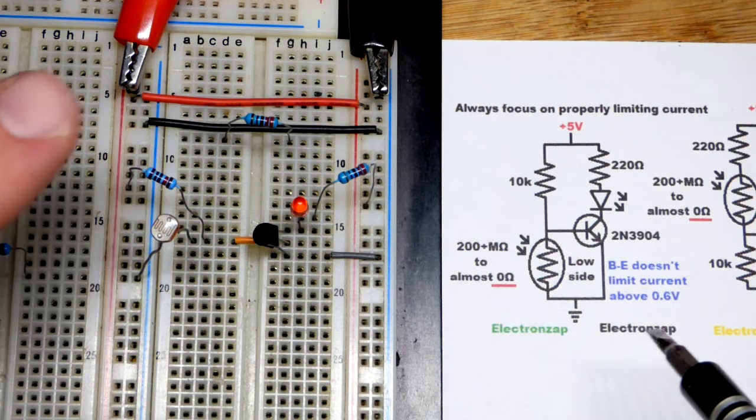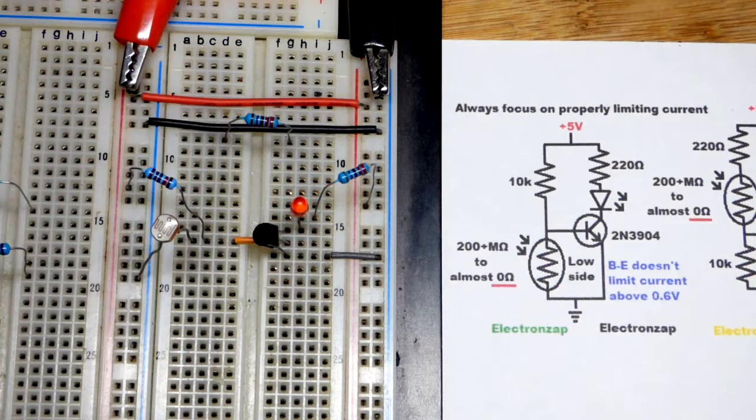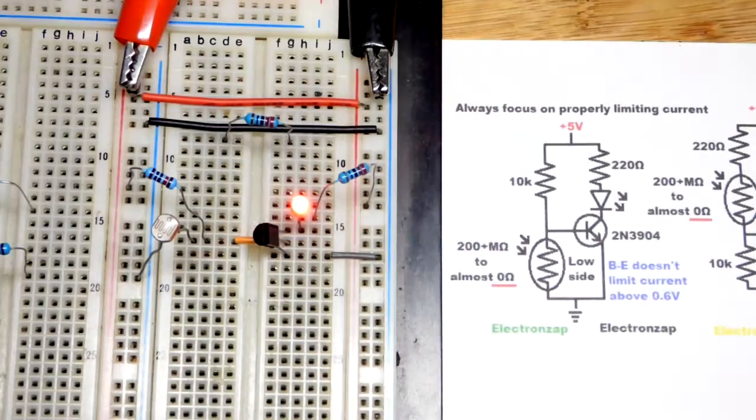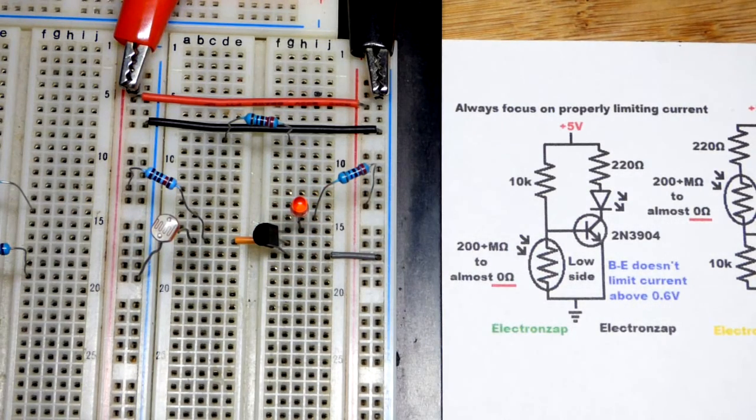But if I darken this at all—this lamp is at its brightest setting—if I dim it at all, there you can see it quickly turns on right there. That's because the transistor started turning on.